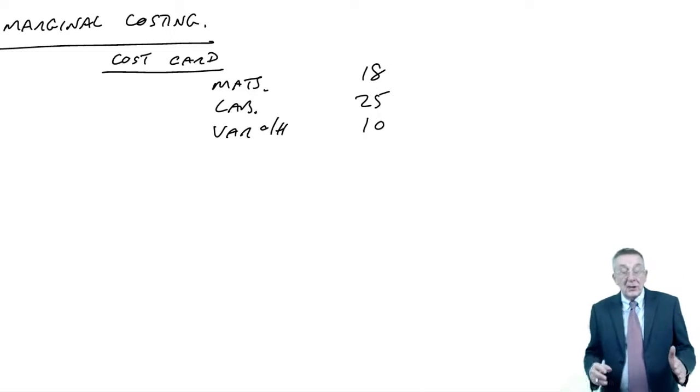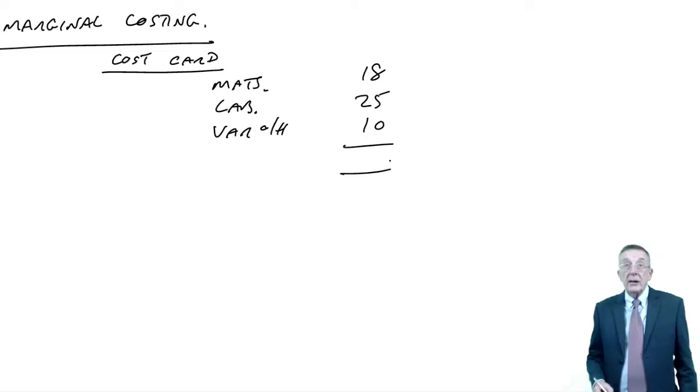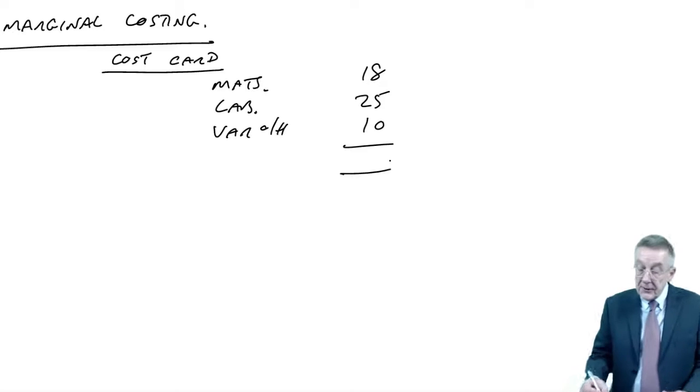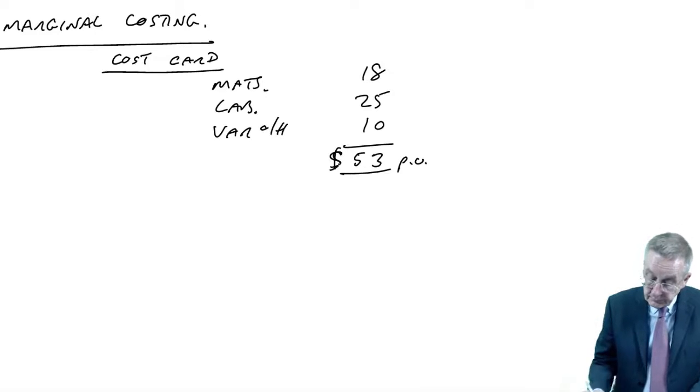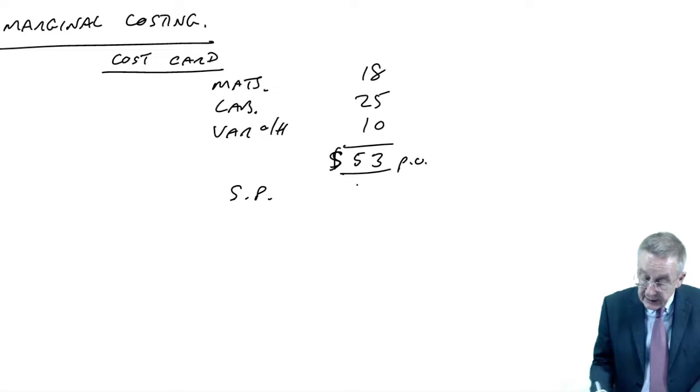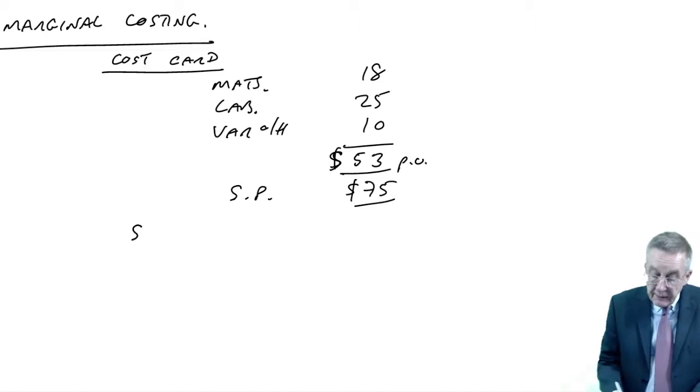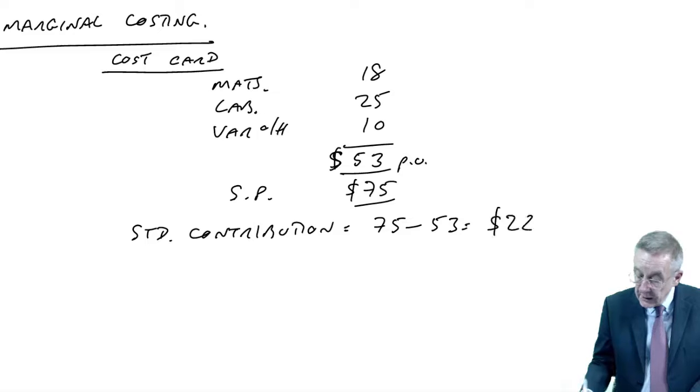Although with absorption costing, we then bring in fixed overheads, with marginal costing we only look at the marginal, the variable costs. So the variable standard cost is $53. The standard selling price was $75. And so we have a standard contribution per unit, $75 minus $53 is $22 per unit.